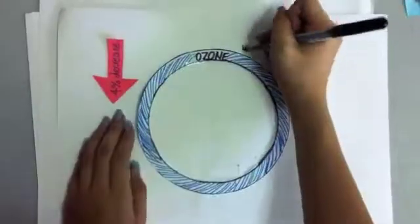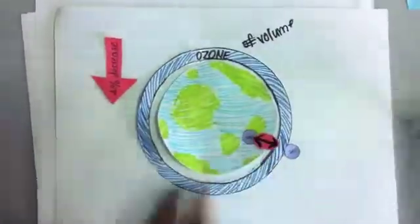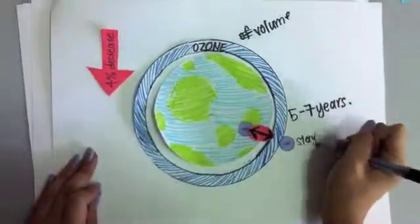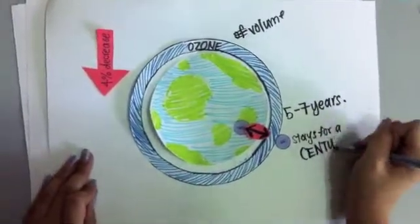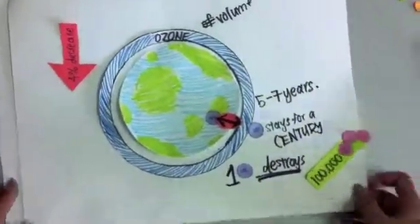There has been a steady 4% decline in the total volume of ozone each year. A CFC molecule takes 5-7 years to reach the upper atmosphere and can stay there for a century, destroying up to 100,000 ozone molecules.